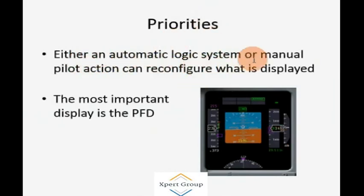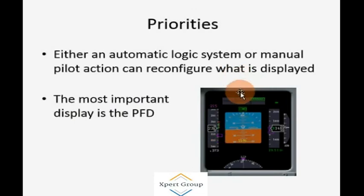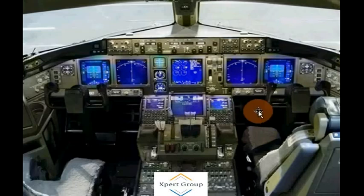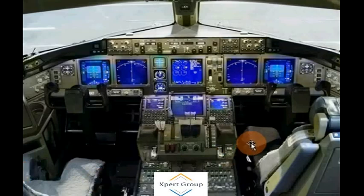Display priorities — either an automatic logic system or manual pilot actions can reconfigure what is displayed. The most important display is the Primary Flight Display. You need to keep in mind that the Primary Flight Display should be your most prioritized display, which you need to have available at all times during flying. This concludes today's lecture. Thank you for watching — please subscribe to our channel for more content and give us positive feedback for improvement.